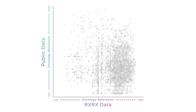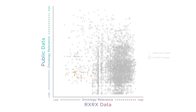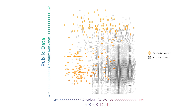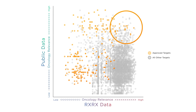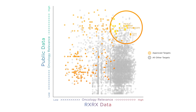Across all targets with approved drugs represented in orange, we see drugs that are not relevant to oncology in the bottom left, and drugs that are relevant to oncology in the top right. When we look at the top right, where both our data and public data suggest a critical role in oncology, we see many targets with approved drugs that are known to play a prominent role in oncology.